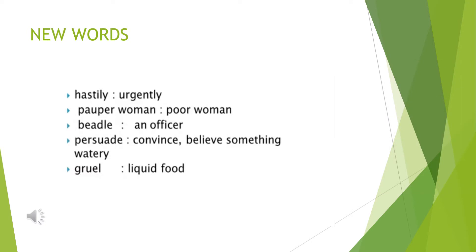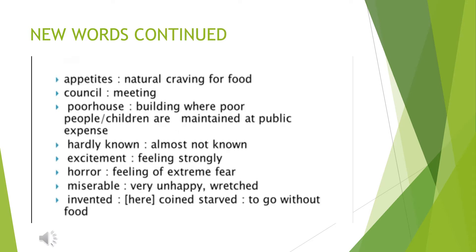Here are a few new words you come across in this chapter. 'Hastily' means urgently. A 'pauper woman' is a poor woman. 'Beedle' is an officer. 'Persuade' means to convince or make someone believe something. 'Watery gruel' is a liquid food. 'Appetites' means a natural craving for food.